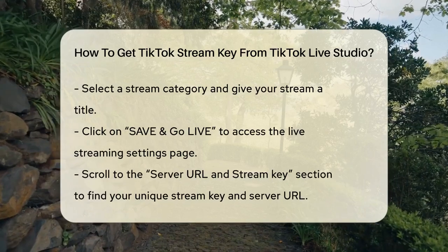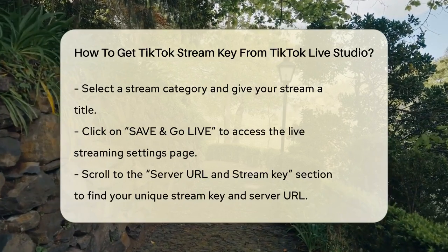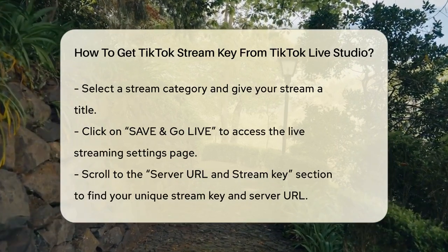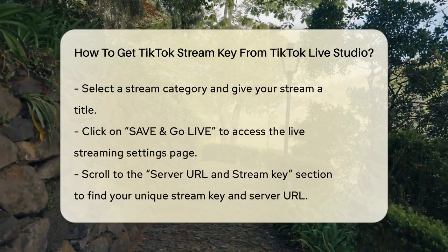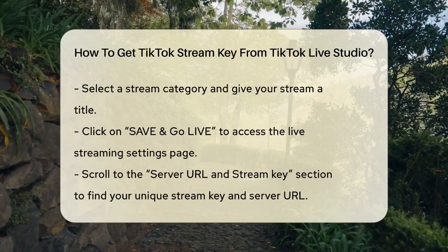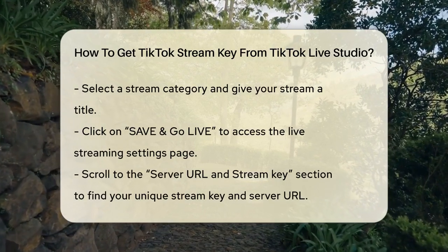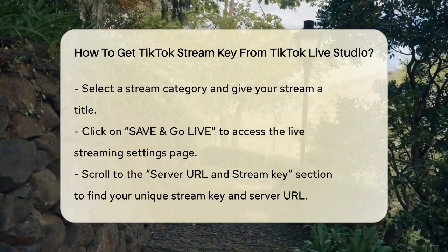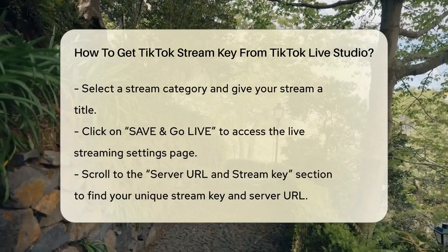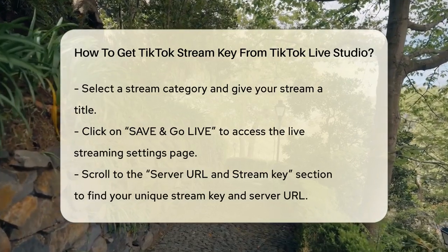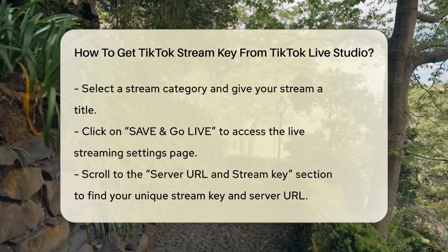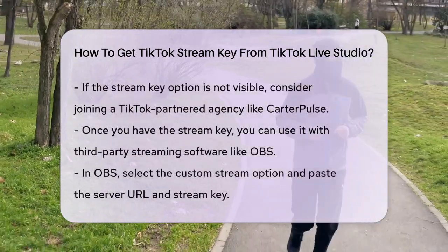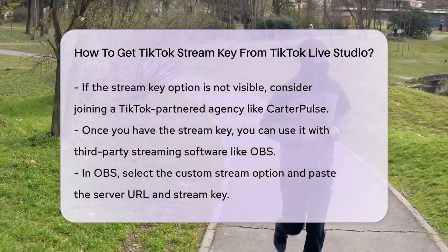After selecting your category and title, click on Save and Go Live. This will take you to the Live Streaming Settings page. Scroll down to the section labeled Server URL and StreamKey. Here, you'll find the unique stream key and server URL that you need.